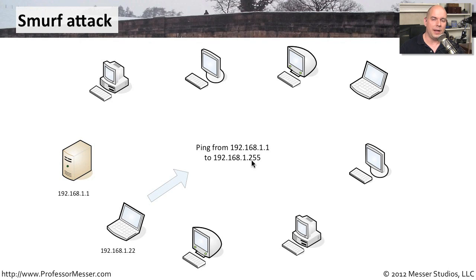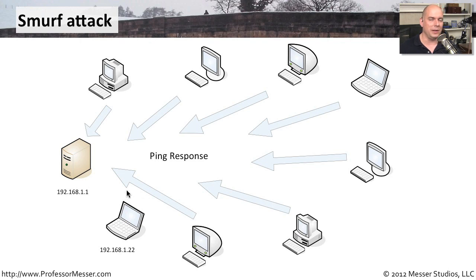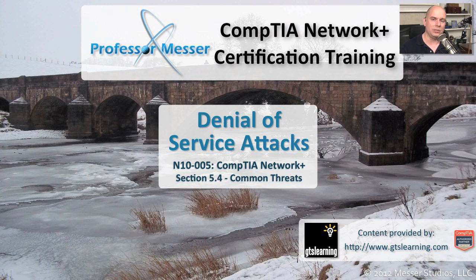Back before this was a known problem, every station that received a broadcast would receive it and act on it. So as soon as they saw this ping request coming from what they thought was 192.168.1.1, they simply replied — sending a ping back to 1.1. Everybody on the subnet would send a ping back to 192.168.1.1. So you could send one packet and have hundreds of packets going back to a single host. You could blast out all of those ping requests, and suddenly hundreds and thousands of packets were filling up all the bandwidth, creating that denial of service situation.